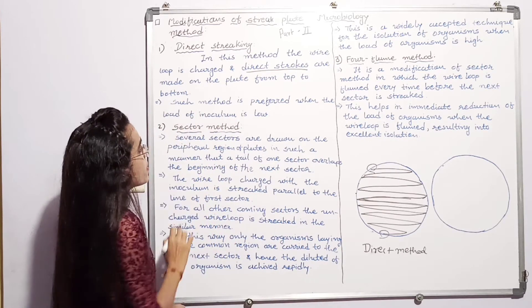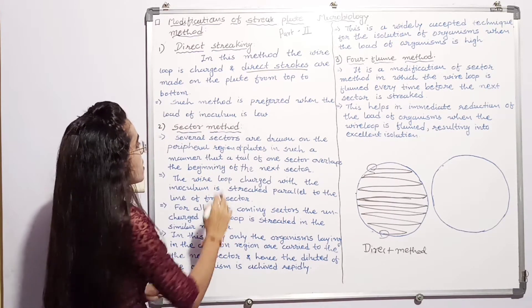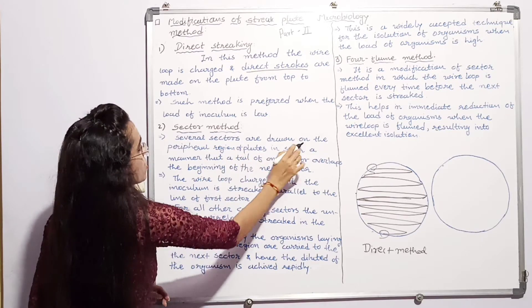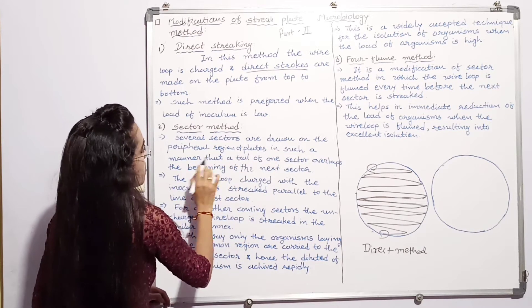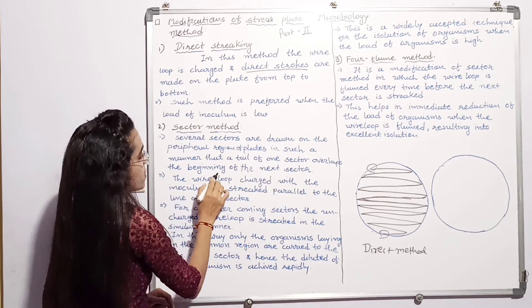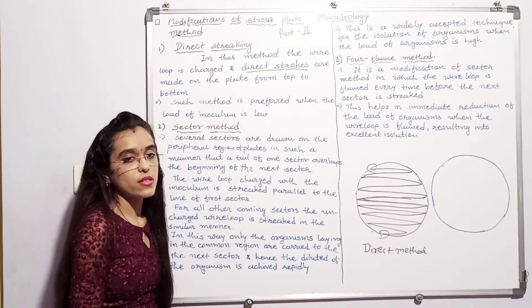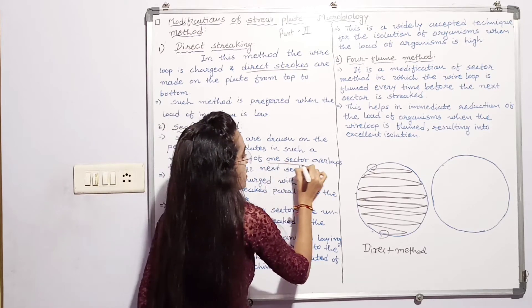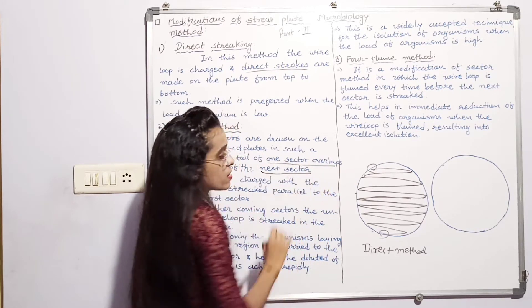Then second method, sector method. Several sectors are drawn on the peripheral region of the plate in such a manner that the tail of one sector overlaps the beginning of the next sector. One sector overlaps to next sector.